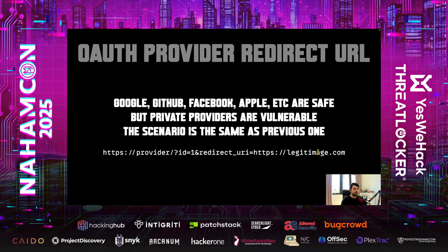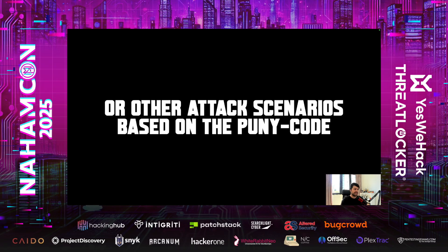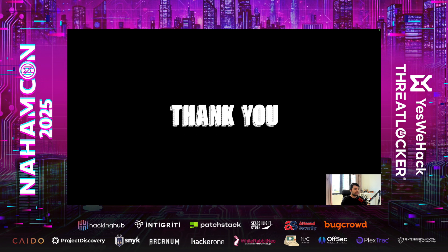This attack can also be carried out in the auth provider callback URL. I'm not going to dive into it — I just want to introduce the idea. The concept is basically the same as the previous ones. We have found many bugs — around 20 — across HackerOne, Bugcrowd, and Intigriti programs. I'm sure there are still many out there, and there are also more attack vectors with Punycode and this root cause. If you find anything new, it would be great to share it online or with us. The talk is over. I hope you find it useful, and thanks a lot for hanging out with us. See you around, goodbye.